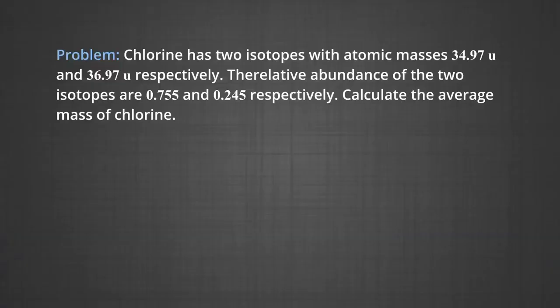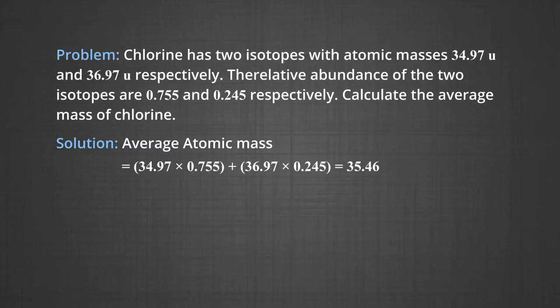We have a problem: chlorine has two isotopes with atomic masses 34.97u and 36.97u. The relative abundances of the two isotopes are 0.755 and 0.245, respectively. The average atomic mass of chlorine is: 34.97 × 0.755 + 36.97 × 0.245, which equals 35.46u.